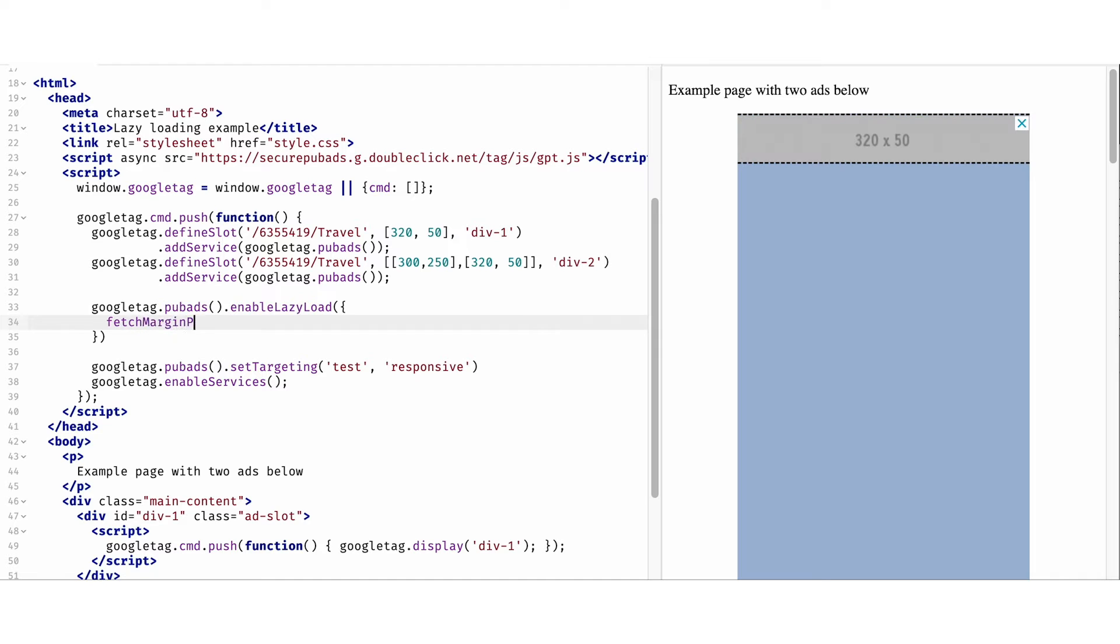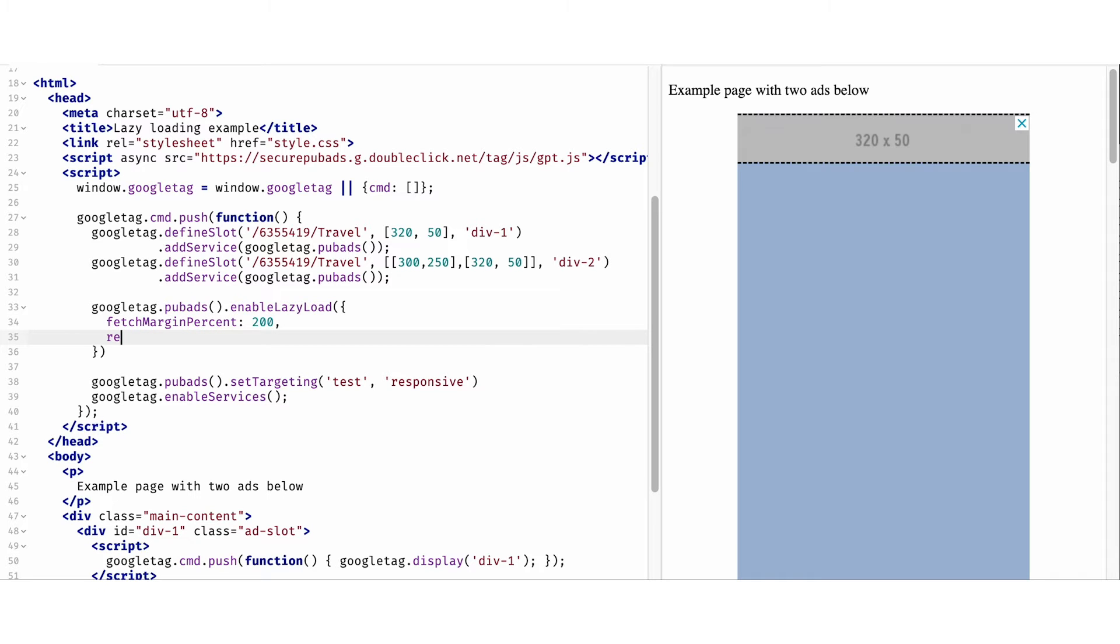This ensures lazy loading is configured before the Google Publisher Tag services are enabled and ad requests are sent. In this example, we're setting the fetch margin to 200. That means an ad will fetch when it's 2 viewports away from the screen. Then, we're setting the render margin to 100, meaning the ad will render when it's 1 viewport away from the screen.